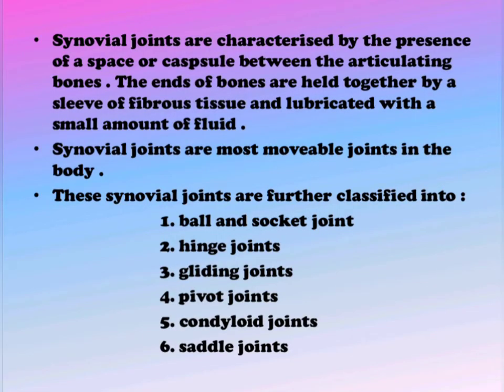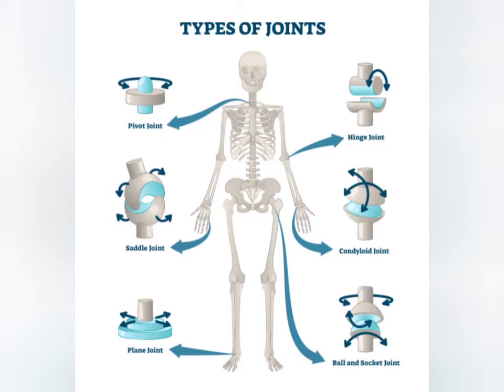In the hinge joint, the articulating ends of the bones fit together like a hinge on a door, and movement is therefore restricted to flexion and extension.